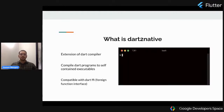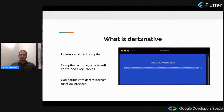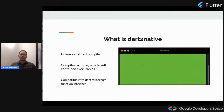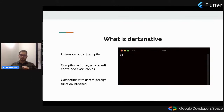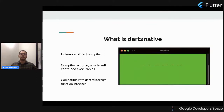What is dart2native? It's an extension of the DART compiler. What it does: it compiles your DART programs — starting from a simple hello world to very complex programs — to self-contained executables. And thirdly, it is compatible with DART FFI, which is called the foreign function interface.